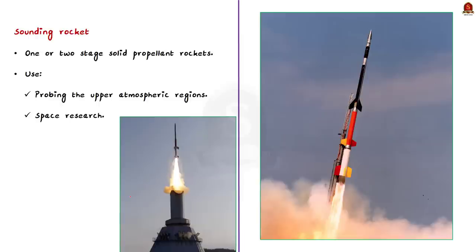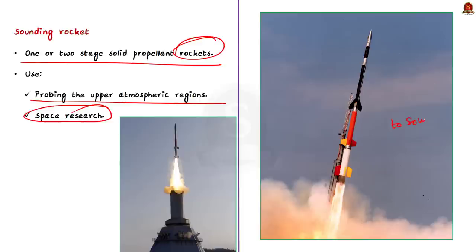So what is a sounding rocket? Does its name came from the unique sound that it makes? Really not. Sounding rockets are one or two stage solid propellant rockets. They are used for probing the upper atmospheric regions and for space research. And know that sounding rockets take their name from the nautical term to sound which means to make measurements. So it does not get this name because of the sound it makes.